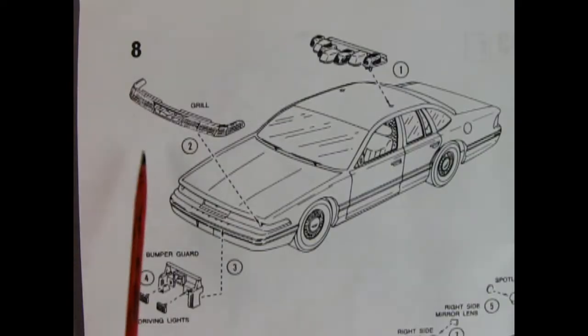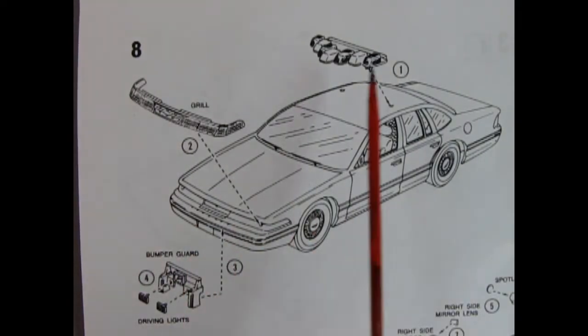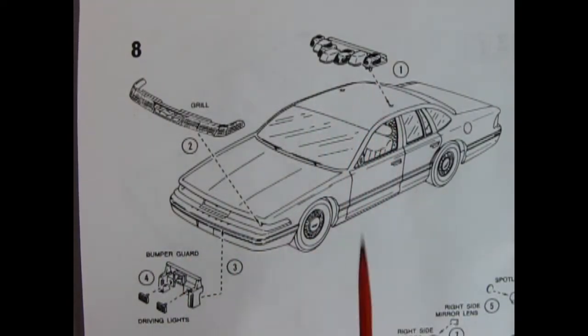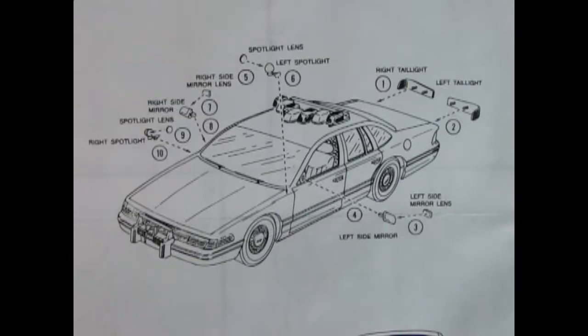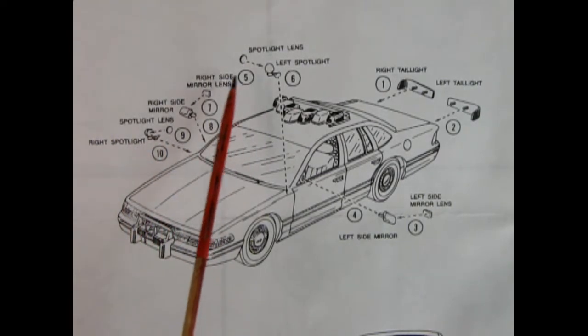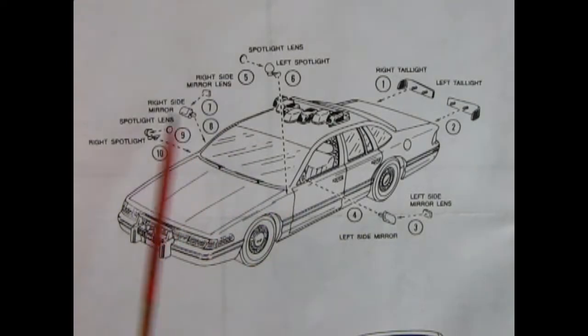Panel eight shows the grille being installed on our car as well as the light bars going into the holes on the top of the roof. Then we have our bumper guard and some driving lights. Panel nine shows our left and right hand side mirrors with the lenses going in place. We have a spotlight lens and a right spotlight and left spotlight and lens which go on the outsides of the car. Then we get our right and left hand side tail lamps.